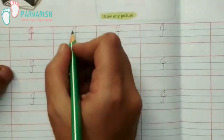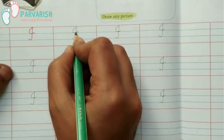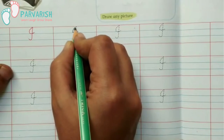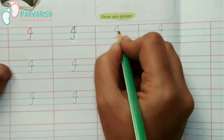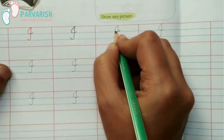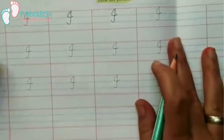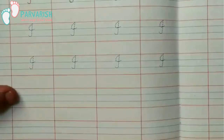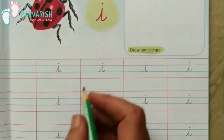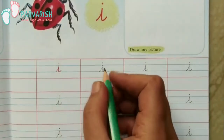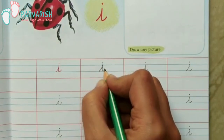Then you have to practice capital cursive I like this. First, we will trace it like this — let me see this trace. After then, you fill the whole page. After then, we will practice small cursive I like this.